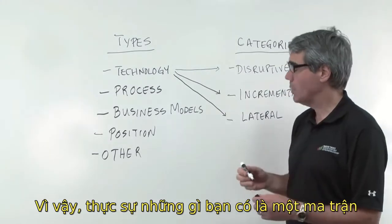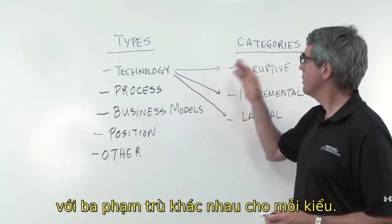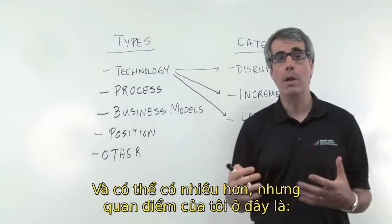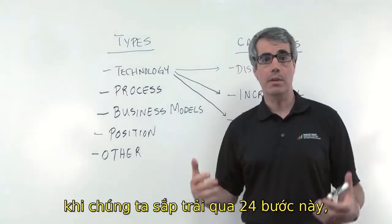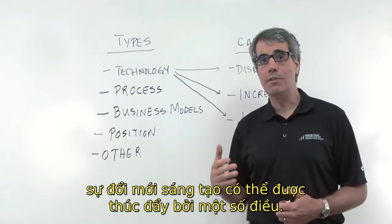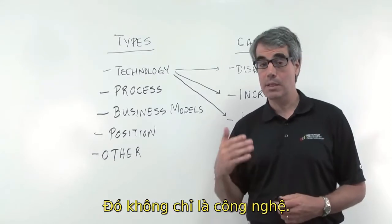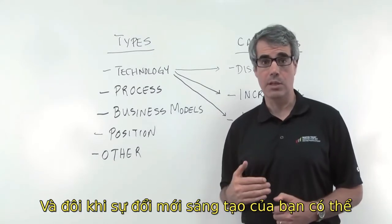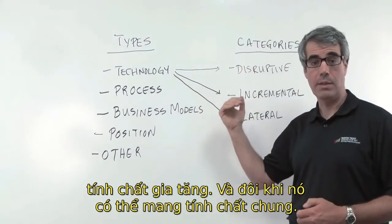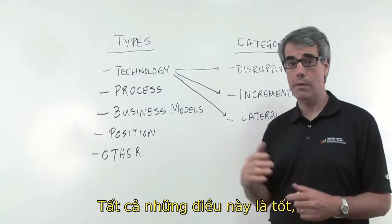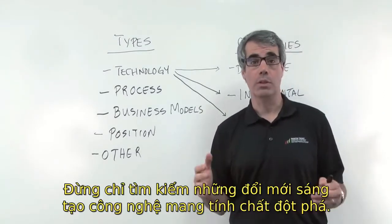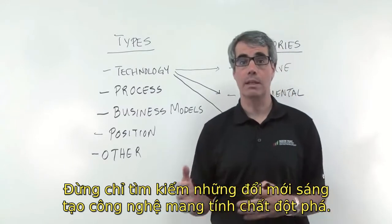So really what you have is a matrix where you have three different categories for each type, and there could be more. My point here is that as we go through these 24 steps, innovation can be driven by a number of things — it's not just technology. Sometimes your innovation can be disruptive, sometimes incremental, and sometimes general. All of these are good, and it depends on your situation. Don't just look for disruptive technological innovations.